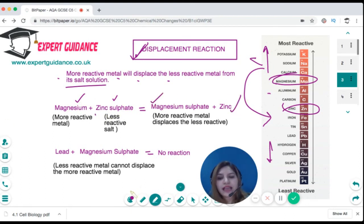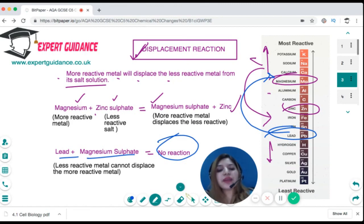On the other hand, if we take the reaction of lead with magnesium sulfate, lead being at the bottom cannot displace the metal at the top, so no reaction takes place. So you can use the reactivity series first to predict the product of displacement and second